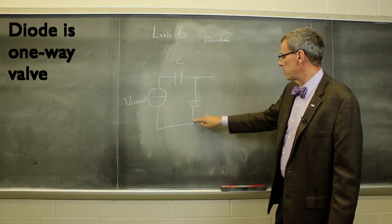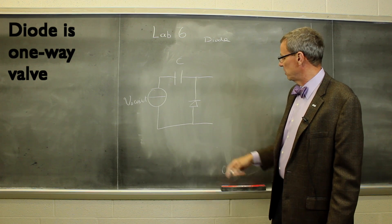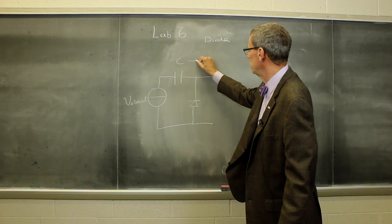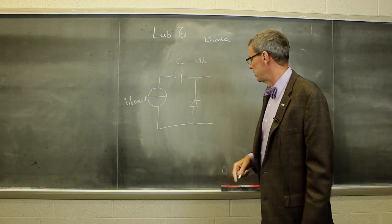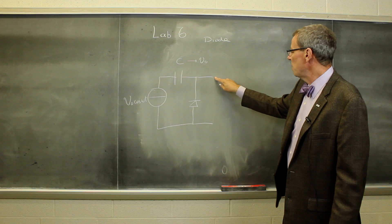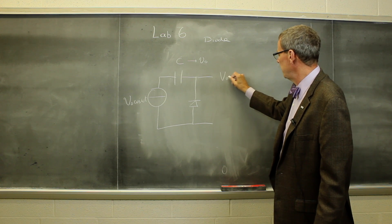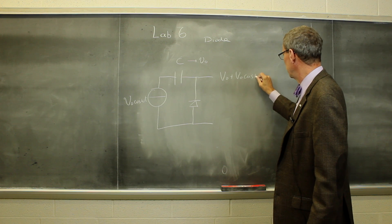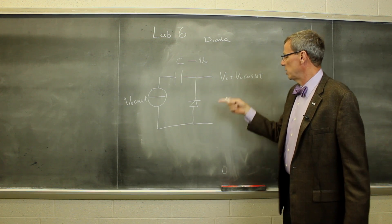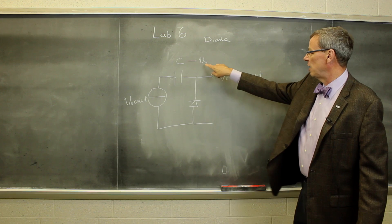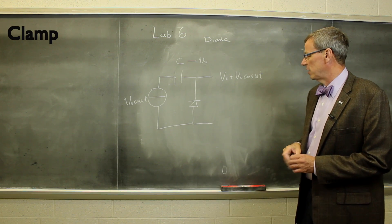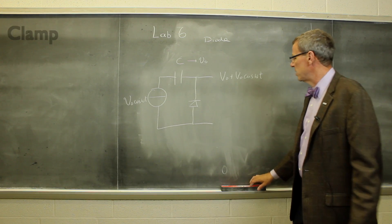The diode only lets current flow this way. It won't allow it to flow that way. So what happens is this capacitor charges up to about V0, the amplitude of this signal here. And then the output voltage here is V0 plus the input signal V0 cosine omega t. So we get this oscillatory signal on top of a DC level V0. That's known as a clamper. We're going to just check that and make sure it works.